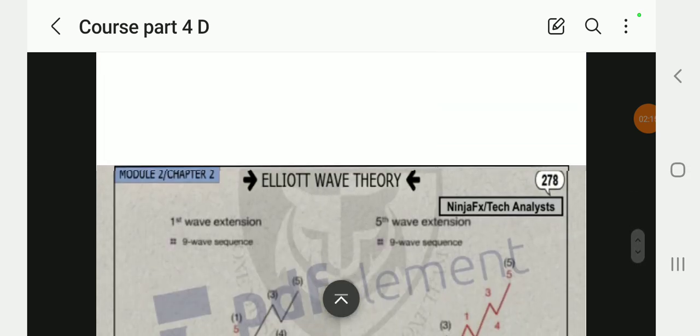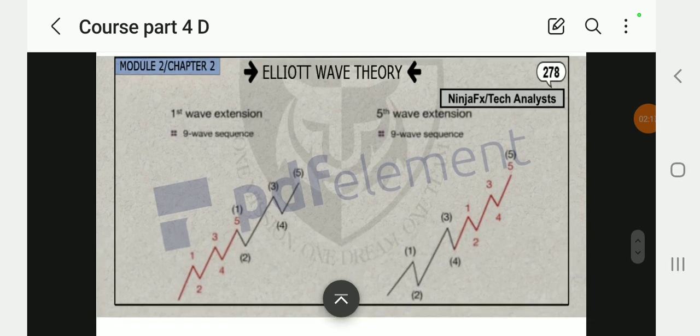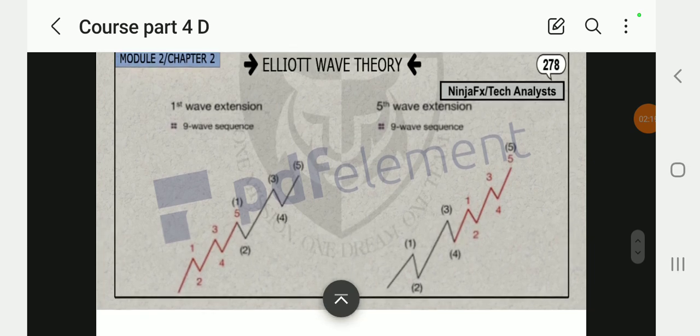We can go through a simple message: distinct in waves if you counted. So first wave extension has a nine-wave sequence, you can see the first wave has nine-wave sequence. Then the fifth wave also has a nine-wave sequence.